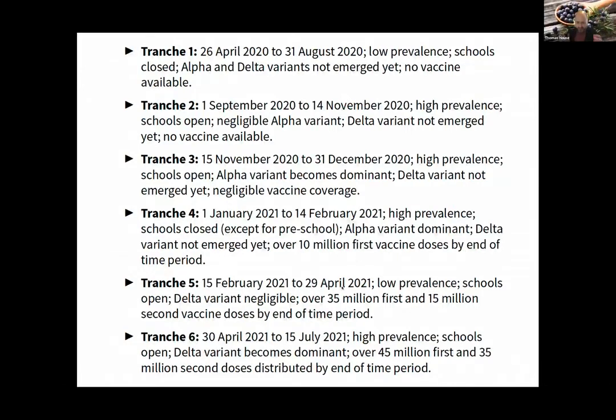Each tranche is chosen to be big enough for statistical power but small enough to see things changing. At each one we look at swab positivity, household size, Alpha and Delta variants, later Omicron, age of participant, and work in patient-facing roles.